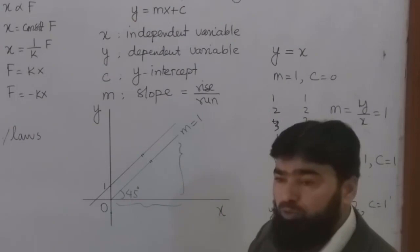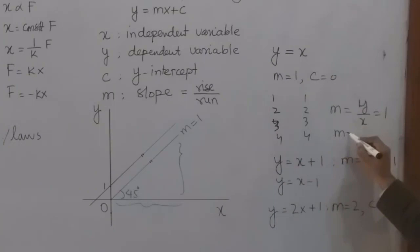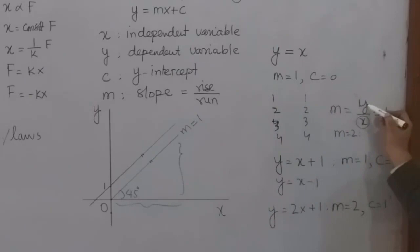What does 2 mean? m equals 2 means that for each value of x, y will have 2 more values. Like if x is 1, this will be 2. And if x is 2, this will be 4, and so on.